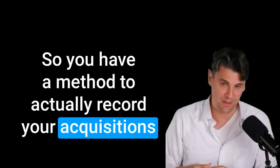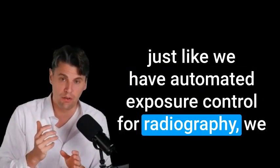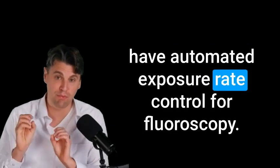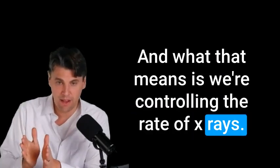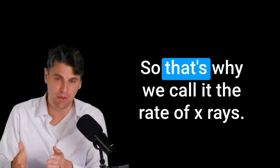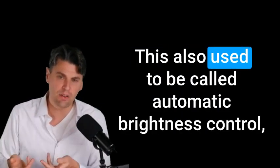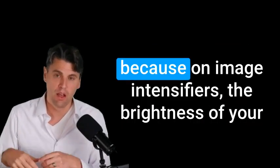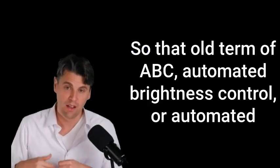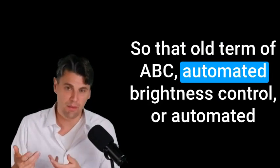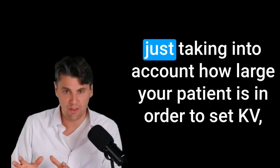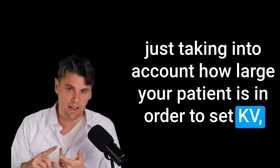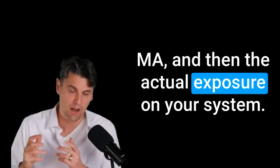Just like we have automated exposure control for radiography, we have automated exposure rate control for fluoroscopy. And what that means is we're controlling the rate of x-rays. So we're controlling the dose per unit time. So that's why we call it the rate of x-rays. This also used to be called automatic brightness control because on image intensifiers, the brightness of your image actually depended on the radiation dose. So that old term of ABC, automated brightness control or automated exposure rate control, those are the same things. And it's just taking into account how large your patient is in order to set KV and then the actual exposure on your system.